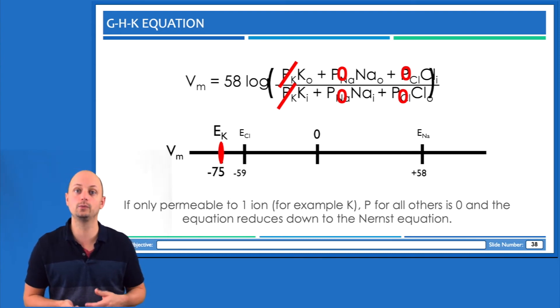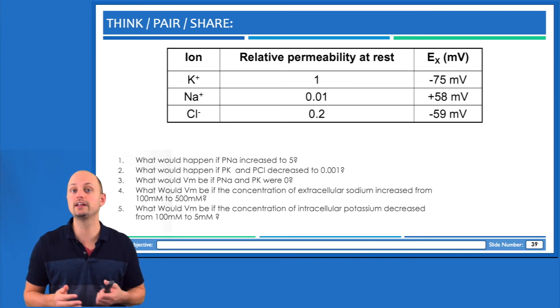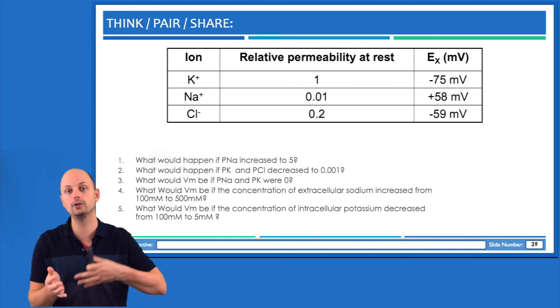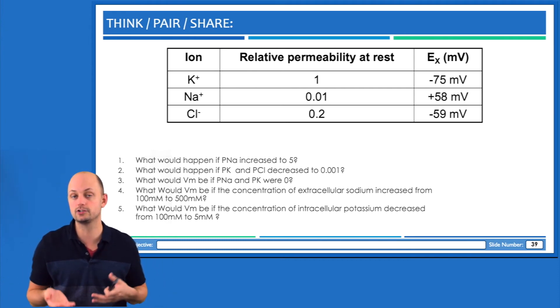The other option that we have is to change the permeability of an ion. And that's something that's relatively easy to do because every single cell has a whole complement of ion channels that it can decide to open or close if it wants to change the permeability of sodium or potassium or chloride ions.